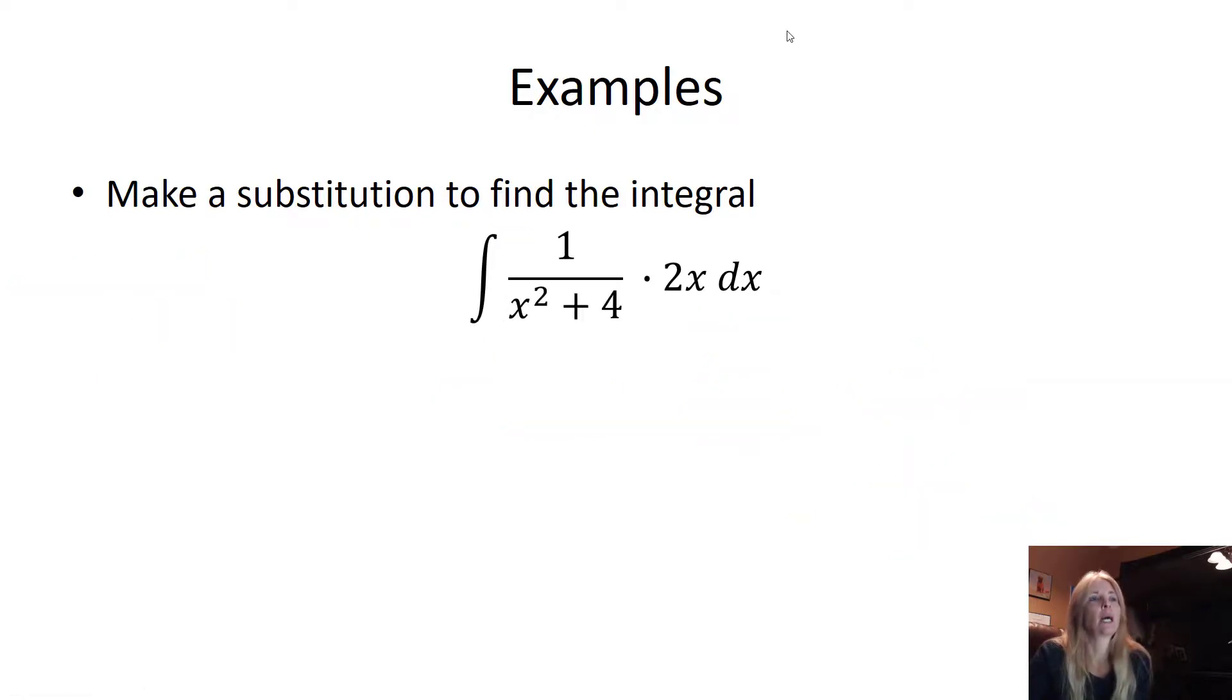So you're just kind of manipulating this to put it in a form that's easy to find the antiderivative. Okay, let's look at another one. We said it could be a denominator, so let's try the denominator - let u equal x squared plus 4. So this becomes 1 over u. I take the derivative, and I get 2x, of course, the 4 is a constant, dx, which matches that exactly. So where I see 2x dx, I put du.